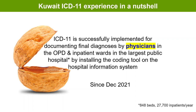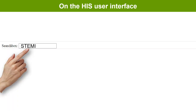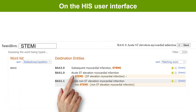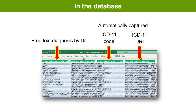ICD-11 is successfully implemented for documenting final diagnoses by physicians in the outpatient department and inpatient wards in the largest public hospital in Kuwait, by installing the coding tool on the hospital information system. This has been the routine way for documenting diagnoses since December 2021. The coding tool is embedded into the electronic medical record system. Doctors use it to type the diagnosis — they can also use abbreviations — look up the set of results, click the one they want, and on the user interface they see only the entity title, not the code, because that's what's meaningful to doctors. At the same moment, the ICD-11 code and the unique identifier for the diagnosis are automatically saved into the hospital database.